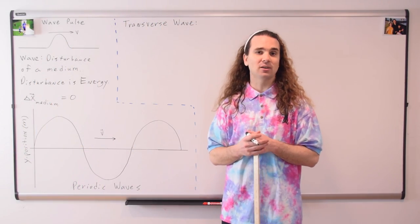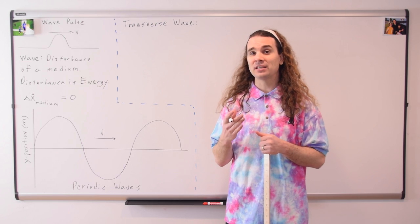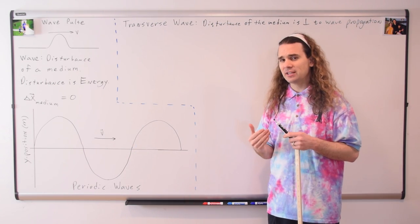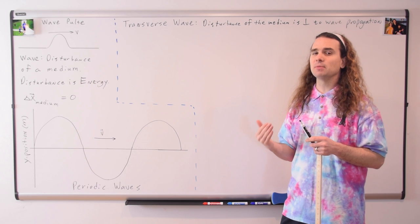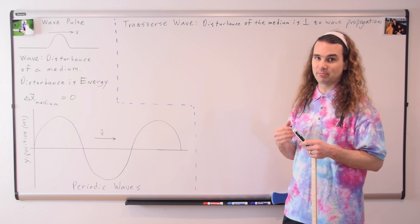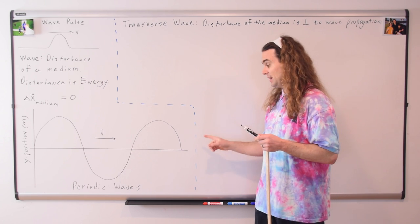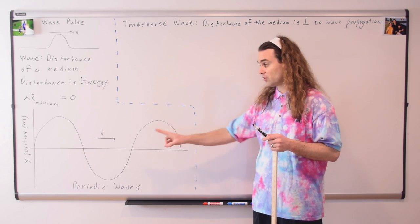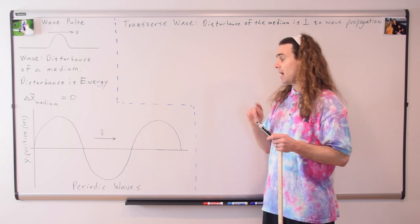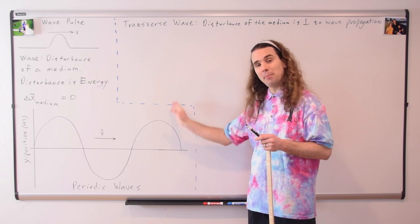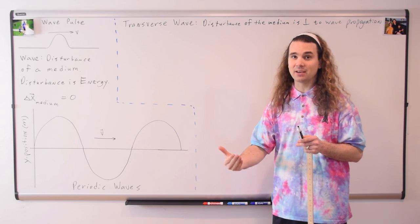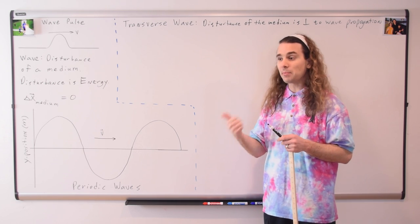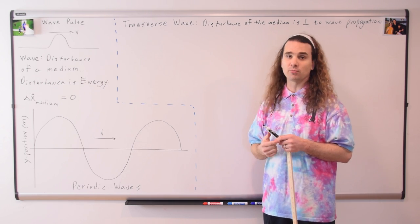There are two types of mechanical waves. One is called a transverse wave. In a transverse wave, the disturbance of the medium is perpendicular to the direction of wave propagation. For example, in this transverse wave drawn on the board, the wave pulse is moving to the right and the disturbance of the medium is up and down, which is perpendicular to the direction of wave propagation. Examples of transverse waves are ripples in a pond and waves on a rope.